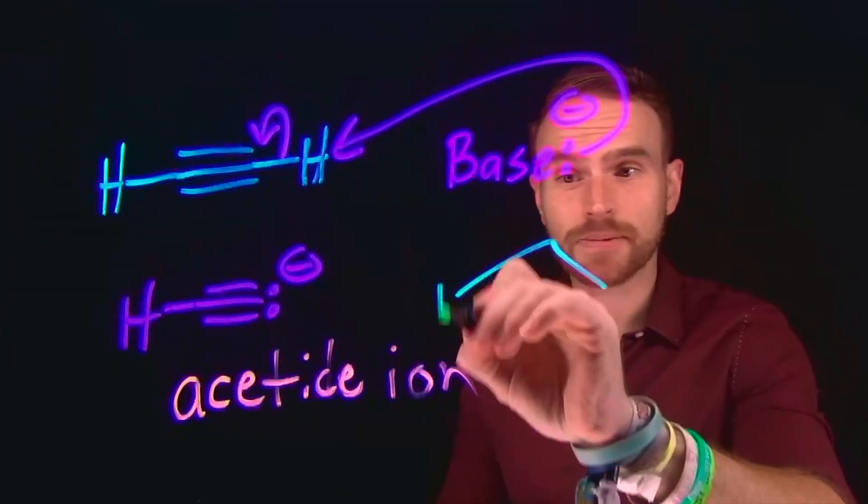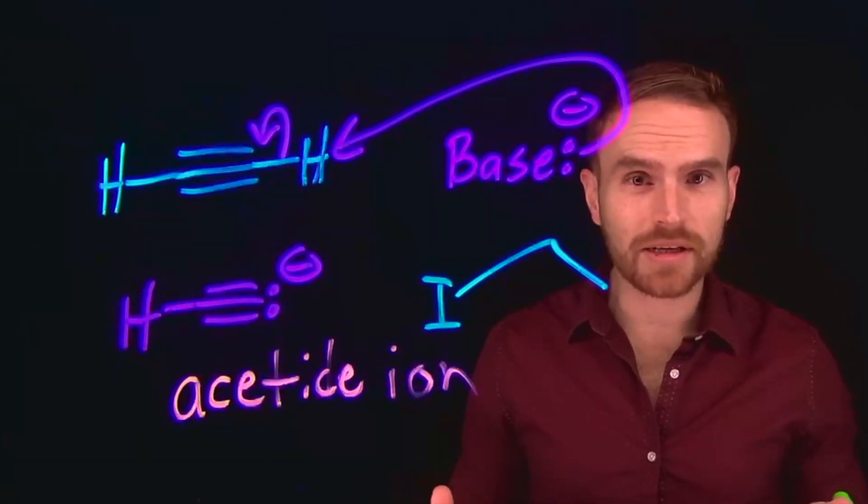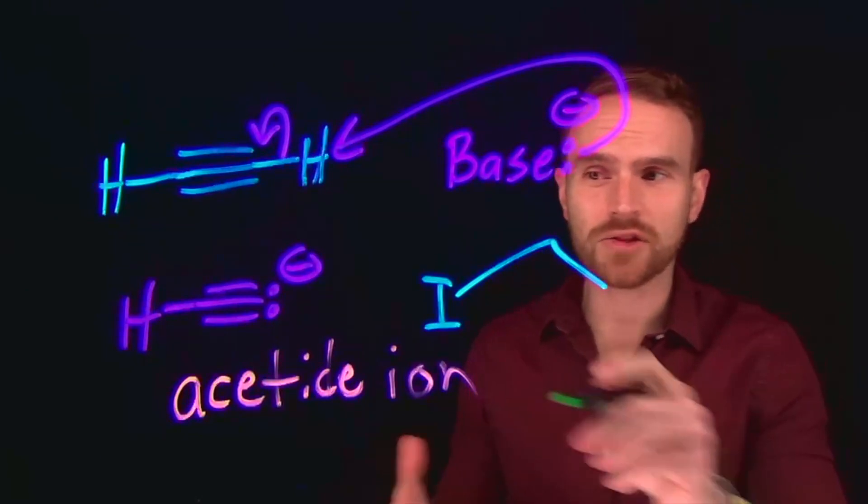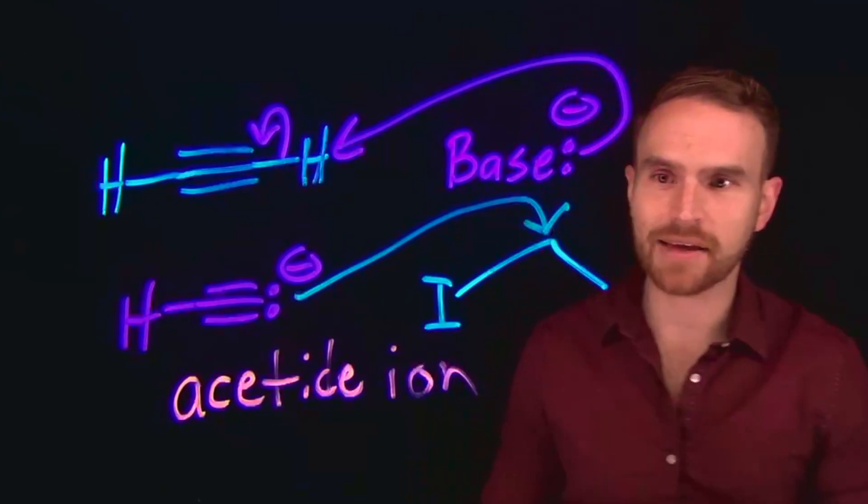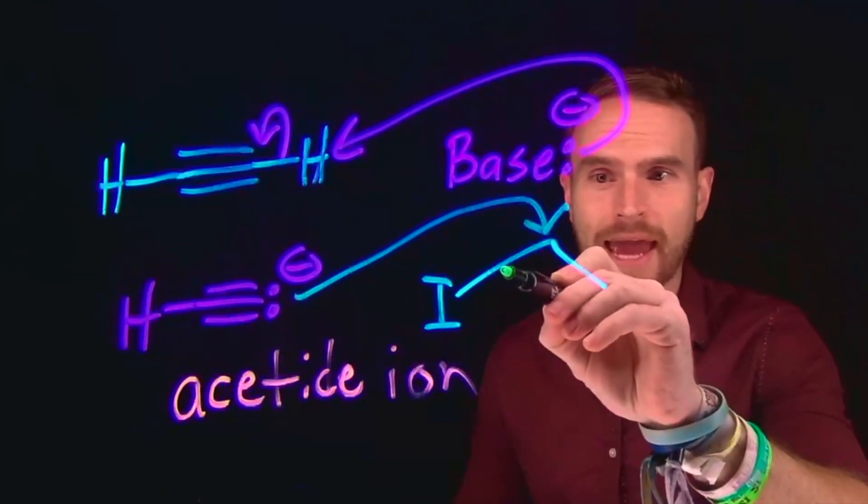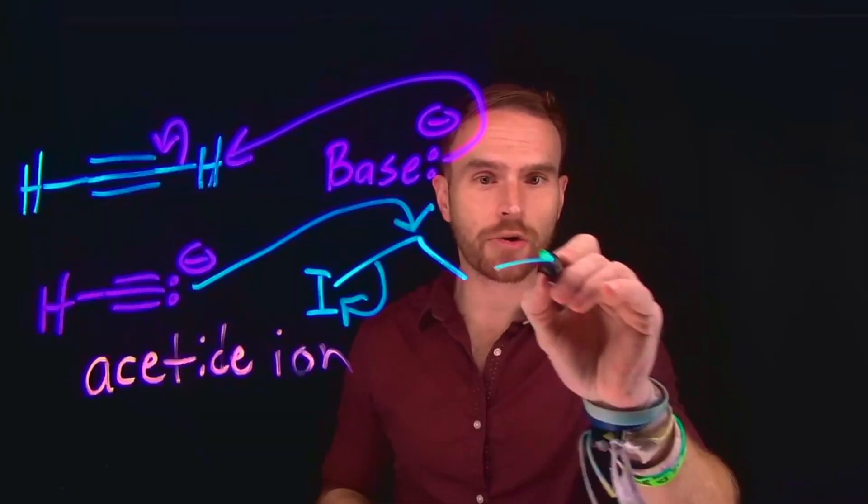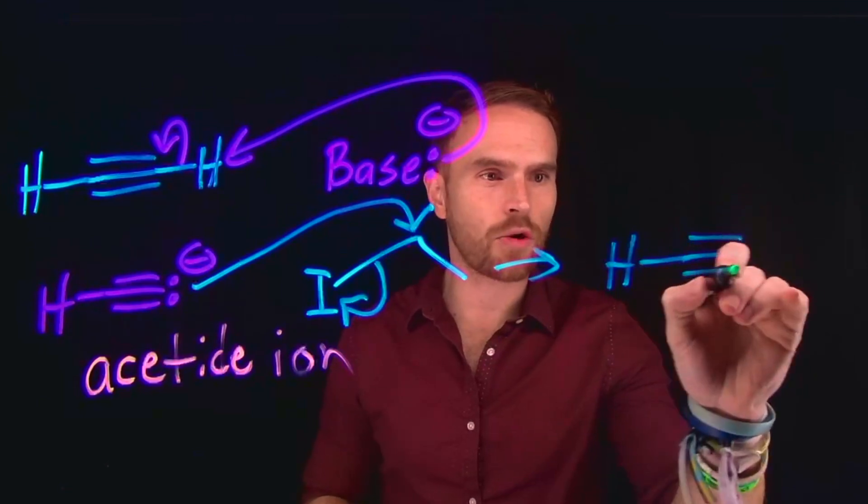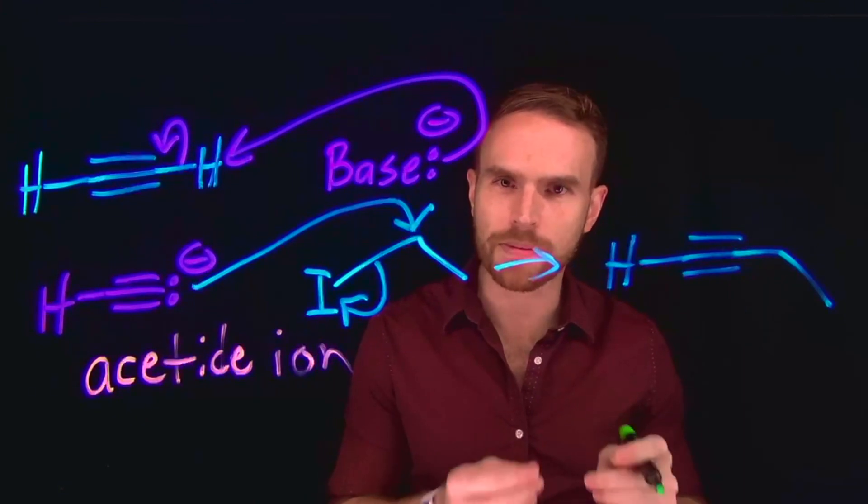And now that we've created this acetylide ion, it can do things like substitution reactions, specifically doing SN2 type reactions. So if we have a primary alkyl halide, we can do an SN2 reaction where these electrons will come and attack this electrophilic carbon and the leaving group halide, in this case an iodide, would leave, generating a brand new carbon-carbon bond, which again is incredibly powerful in terms of organic chemistry because it's very difficult to make carbon-carbon bonds.